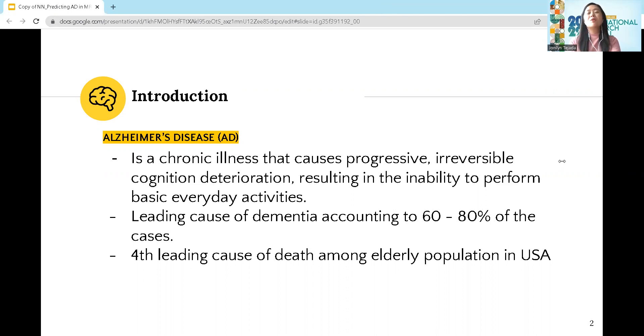The disease also causes personality and behavioral changes. It is the leading cause of dementia, accounting for 60 to 80 percent of the cases, and it is the fourth leading cause of death among elderly population in the USA. Contrary to popular assumption, Alzheimer's disease is not a normal part of aging. The greatest significant factor, however, for the condition is growing age, and the majority of those affected are 65 years old and older.